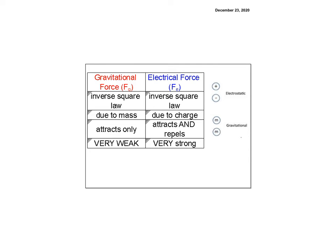And the last thing that compares them is that the gravitational force is very weak, but the electrical force is very strong. So the constants, remember, the big G constant is much much less than the little k. And it's due to mass and it's due to charge, and it attracts and repels, and it only attracts.